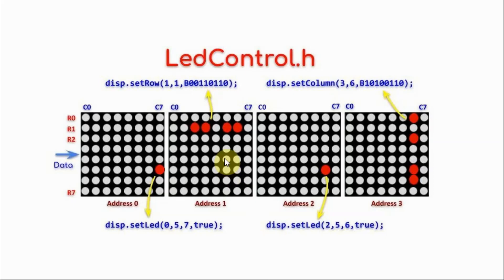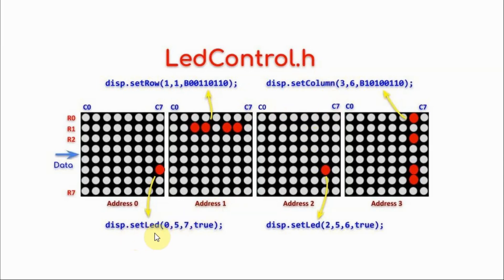We can easily program the MAX7219 dot-matrix module by using the LED control library, which has three functions that allow for pixel manipulation on the module. These functions are setRow, setColumn, and setLED.